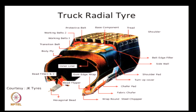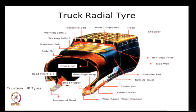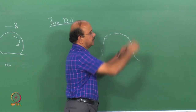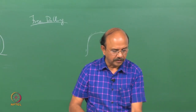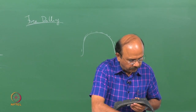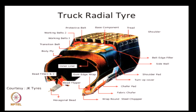Courtesy JK Tyres, we will look at the different components in the sections. You would see that there is what is called as a body ply, which consists of a number of wires running from one bead to the other — they are radial in nature, that is why it is called a radial tyre. The body ply has steel reinforcement in a truck tyre. The body ply has rubber on either side. The most important component towards the inner side is called as the inner liner.